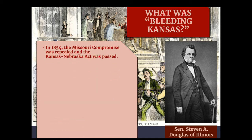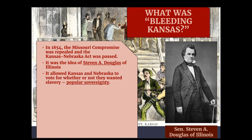In 1854, after the Mexican-American War, the Missouri Compromise was repealed after lasting 34 years, and the Kansas-Nebraska Act was passed, replacing it. This was the idea of Stephen A. Douglas of Illinois, who competed with Abraham Lincoln for senator in Illinois and won, and then competed against Lincoln for president a few years later and lost. This law allowed Kansas and Nebraska to vote on whether or not they wanted slavery — the idea of popular sovereignty.